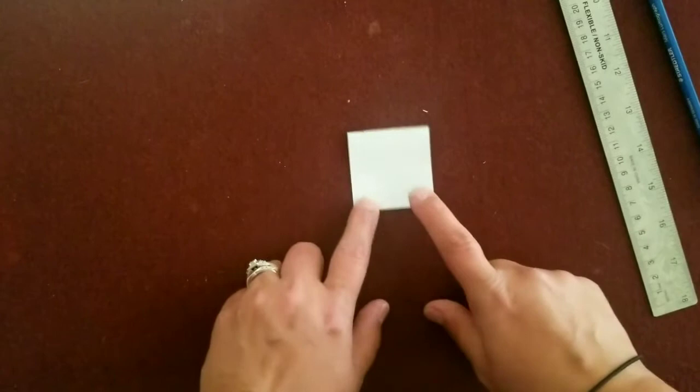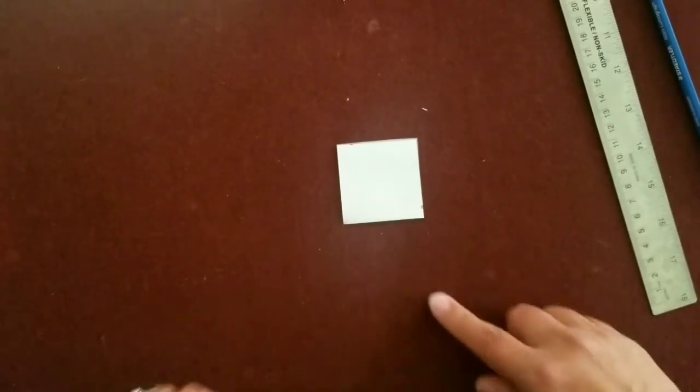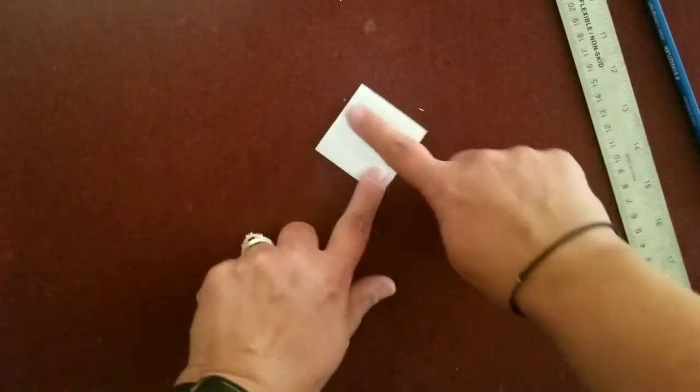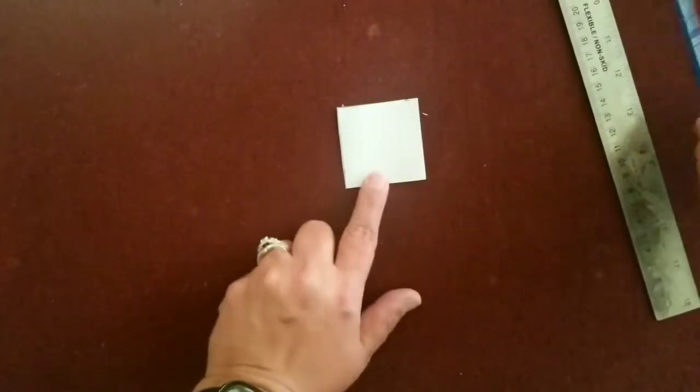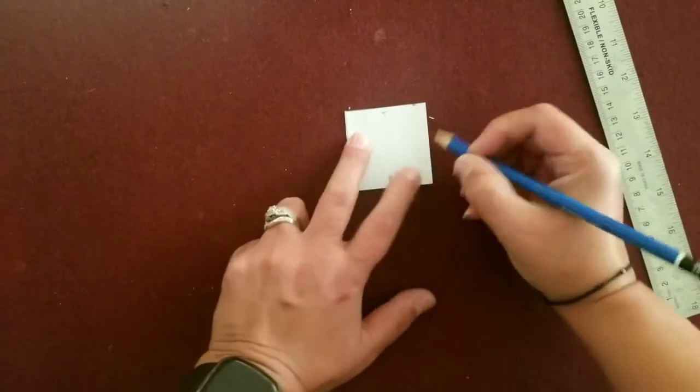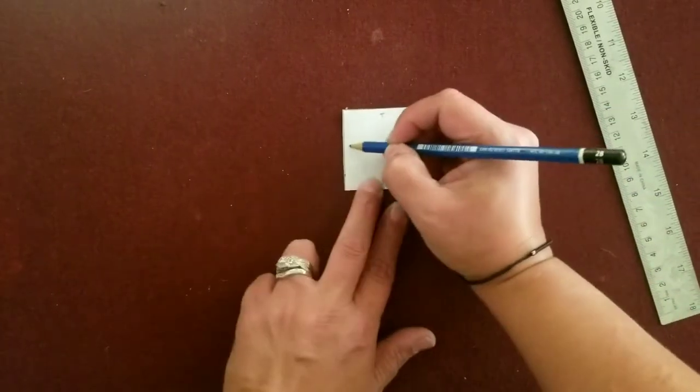This little square is what we're going to use to create our puzzle piece. So now that we have our 2 inch square, it doesn't matter which direction it's pointing. You have a top, you have a bottom, you have a right, and you have a left.